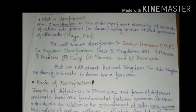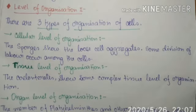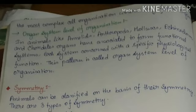In this kingdom, we classify animals on some basic features. Level of organization. There are three types of organization. Cellular level organization: sponges show loose cell aggregates, and some division of labor occurs among the cells. Tissue level organization: cnidarians show some complex tissue level organization. Organ level organization: members of Platyhelminthes and other higher phyla show organ level organization of cells.